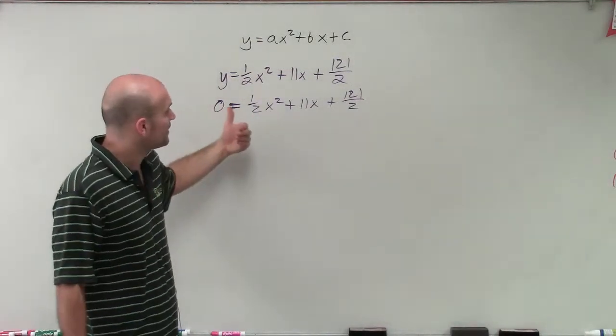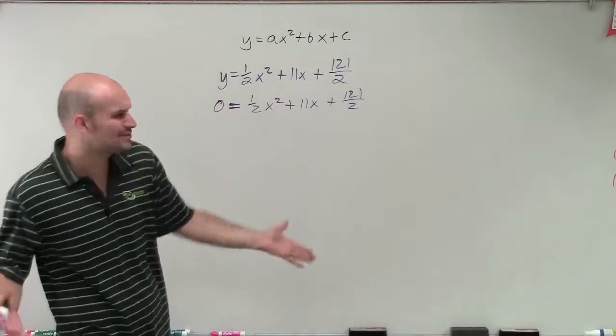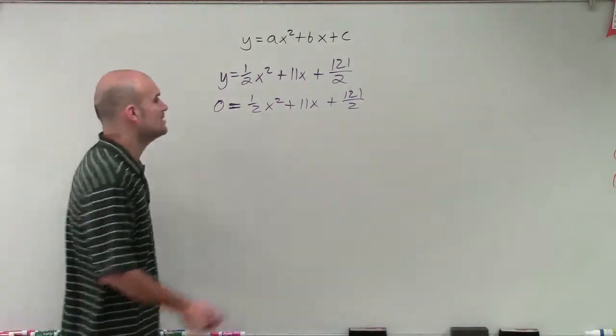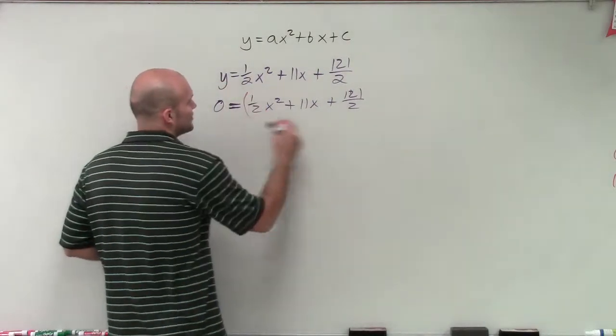But if I factor out a 1 half, I'm going to be kind of messing with this middle term, and that's 22, and it might get a little bit confusing for me. So the best thing that I like to do is how about I just multiply everything by 2.